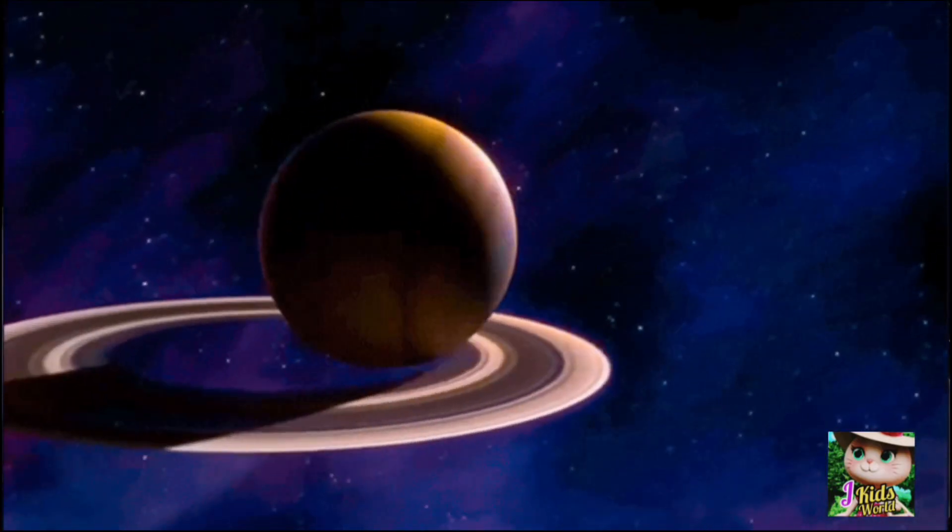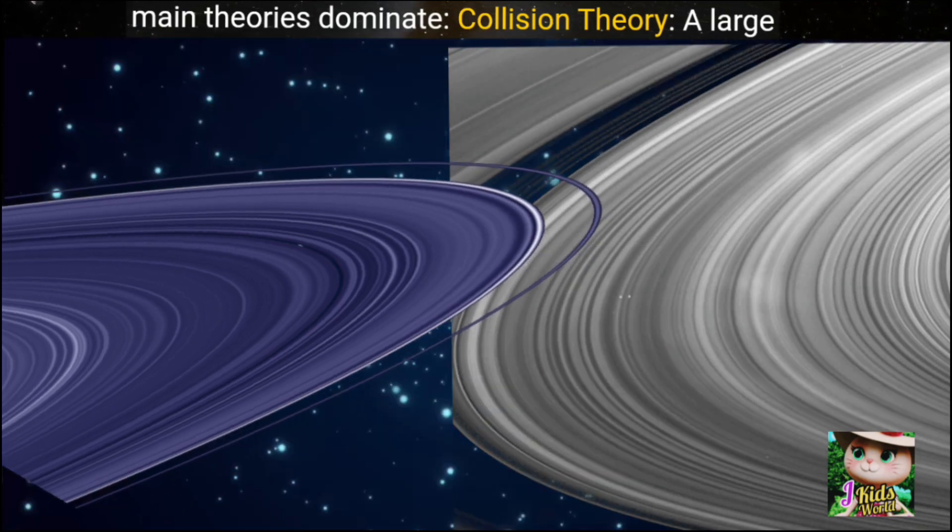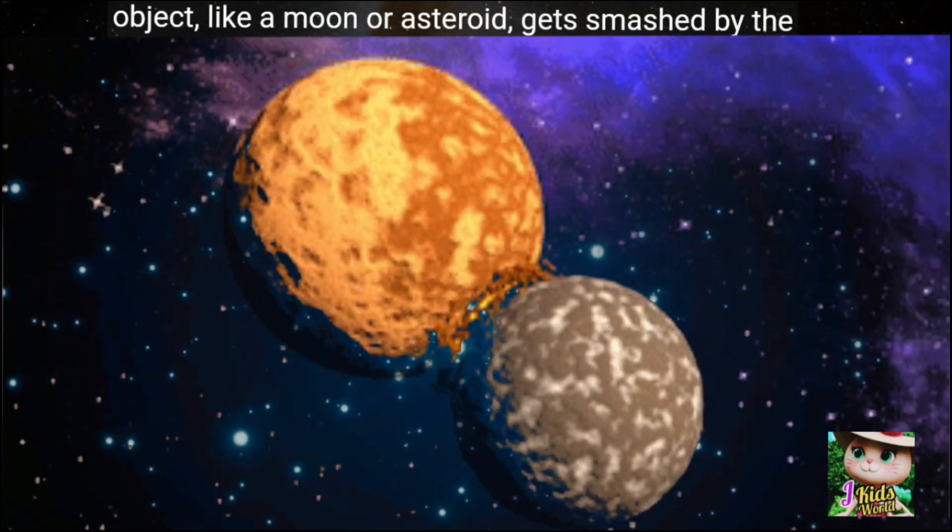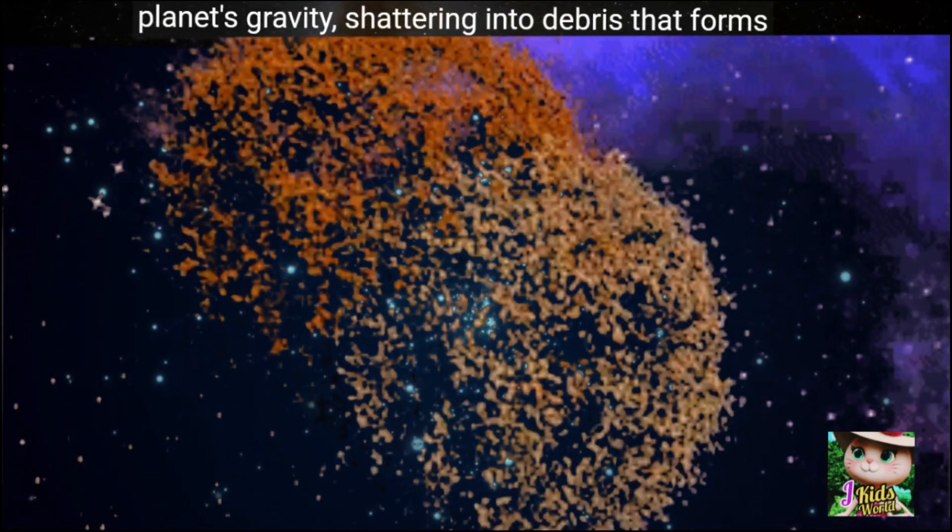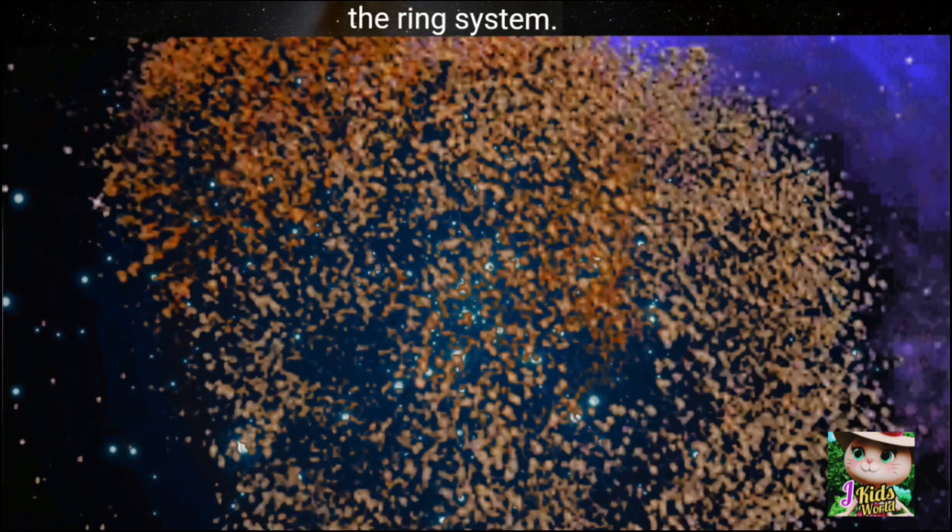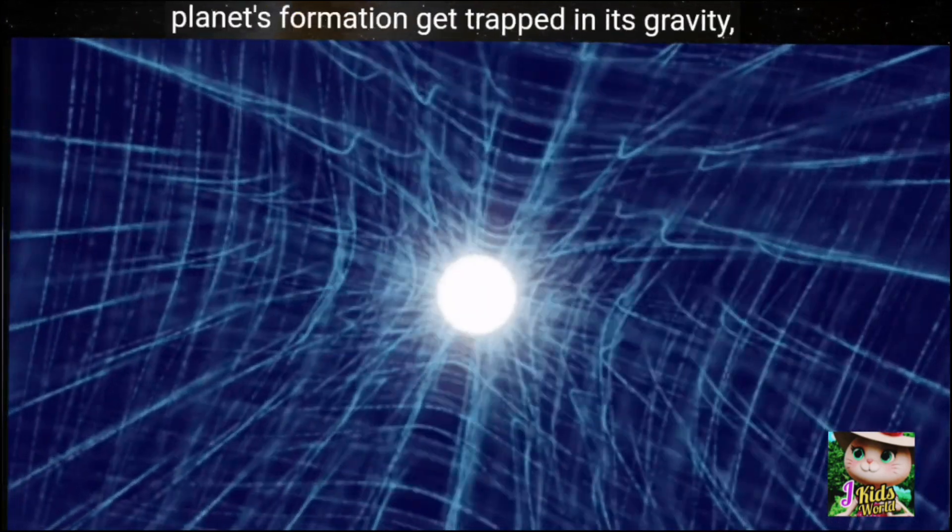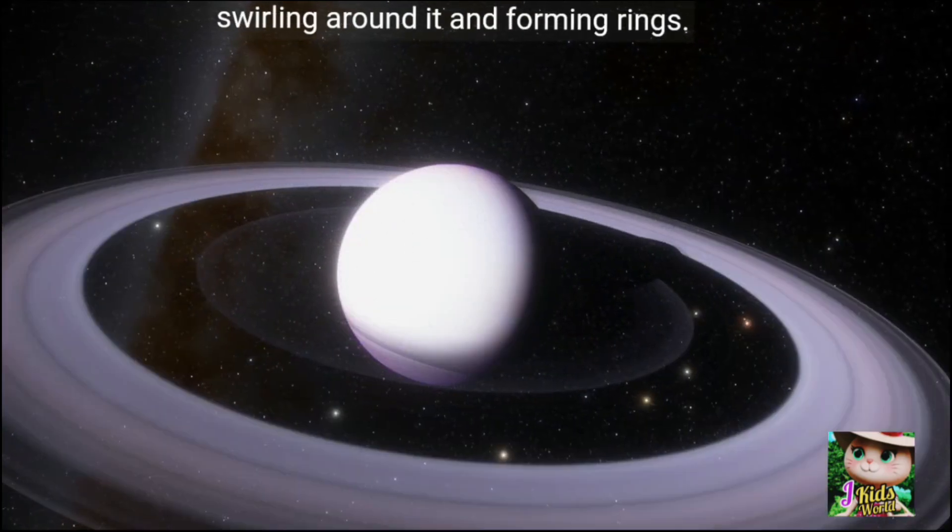The exact origin of rings is still debated, but two main theories dominate. Collision theory: a large object, like a moon or asteroid, gets smashed by the planet's gravity, shattering into debris that forms the ring system. Capture theory: dust and ice left over from the planet's formation get trapped in its gravity, swirling around it and forming rings.